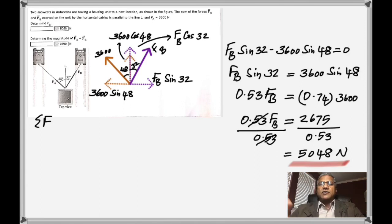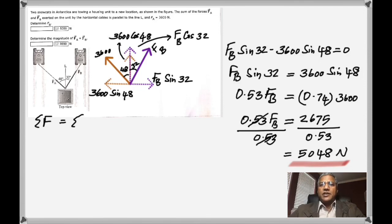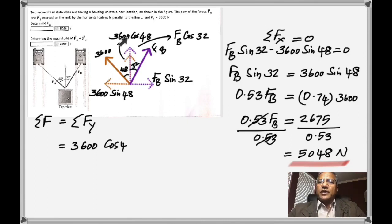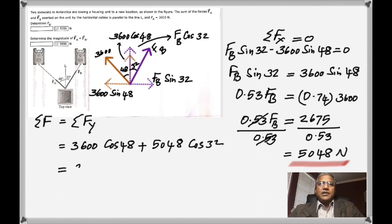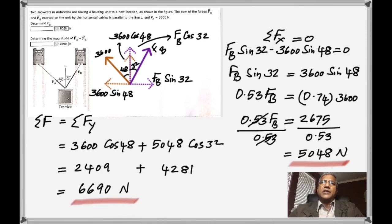The second part asks us to find the net force. Since the net force along X is zero, the net force is just the sum of the Y components. That is 3600 cosine 48 plus FB cosine 32. Substituting FB equal to 5048, we get 2409 plus 4281, which adds up to 6690 Newtons as the net force.